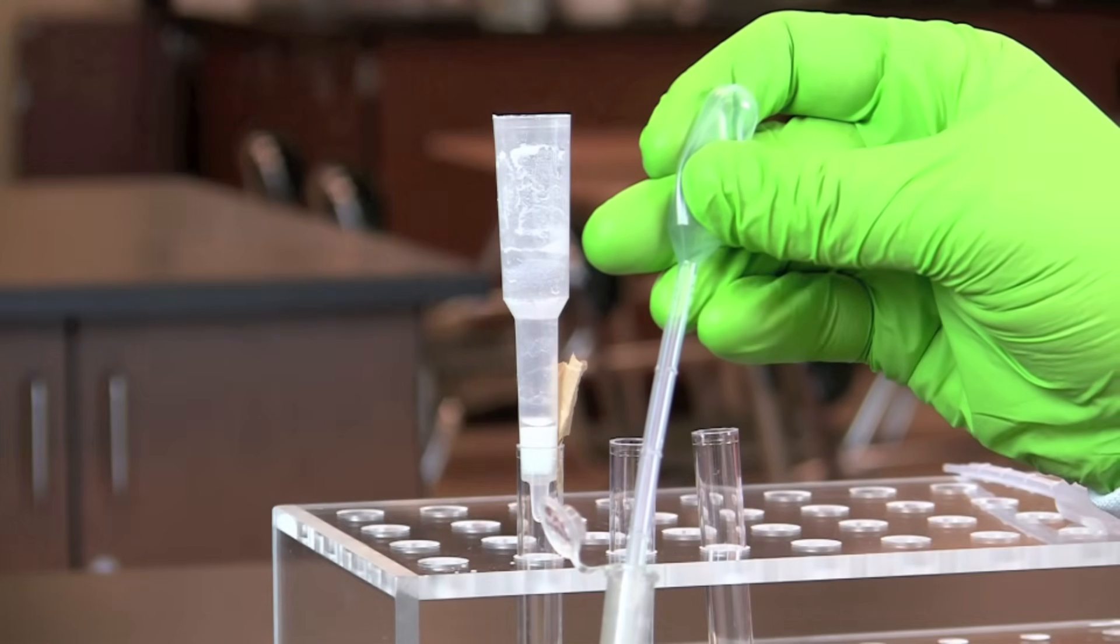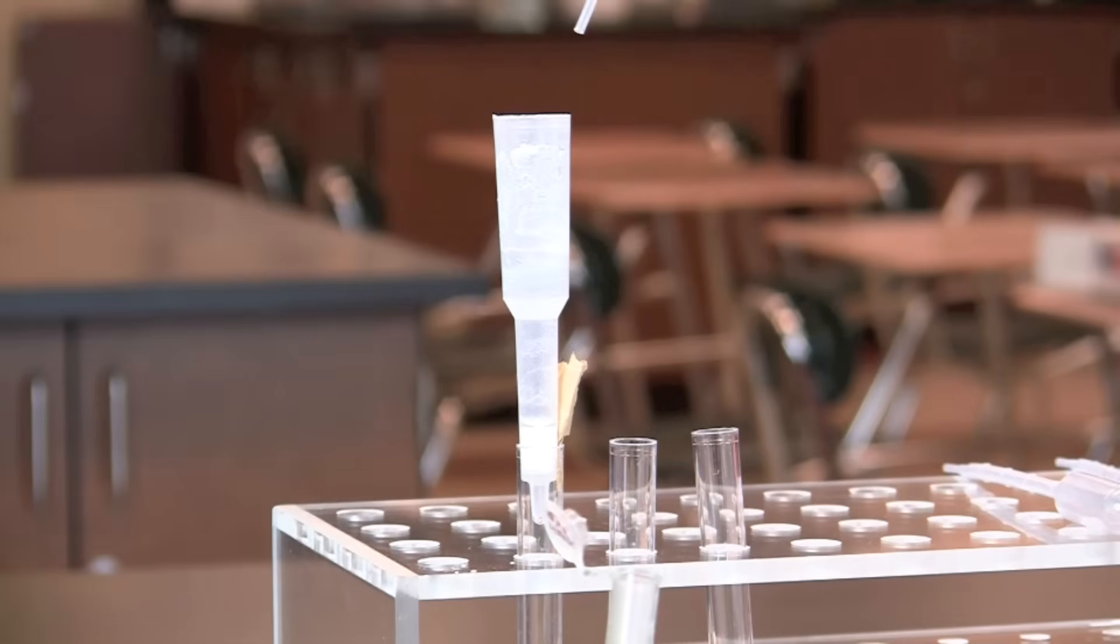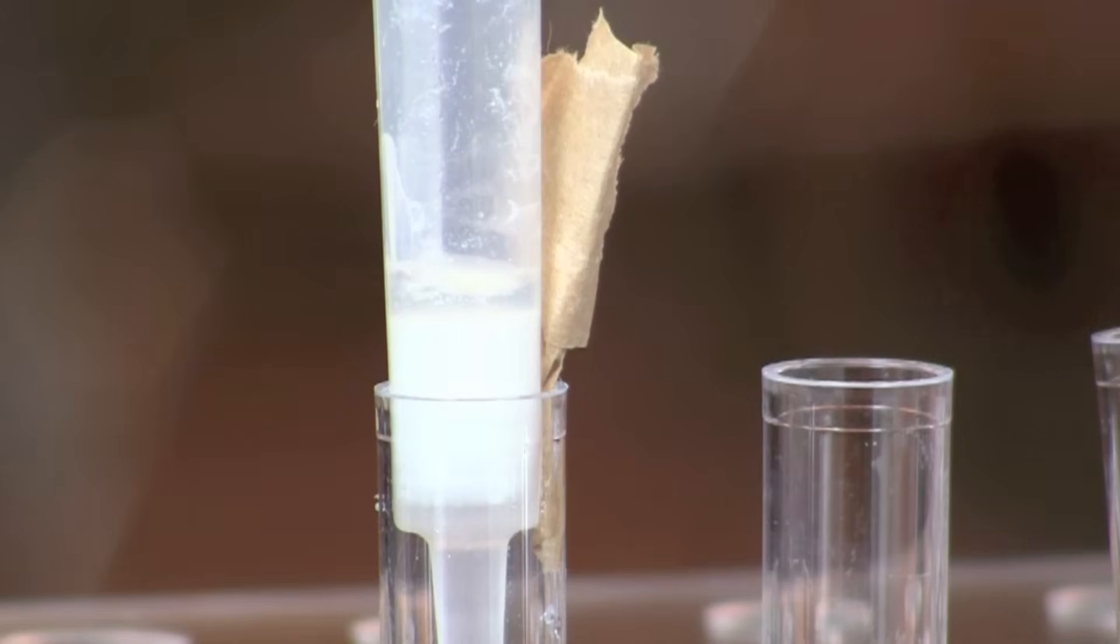Next, pipette 250 microliters of bacterial lysate with GFP to the column. Insert the pipette as far into the column as possible without touching the resin, and pipette slowly and gently to avoid any disturbance of the column bed.